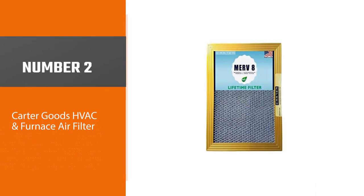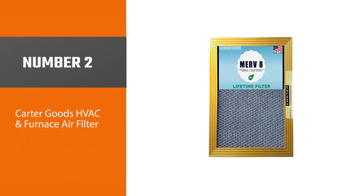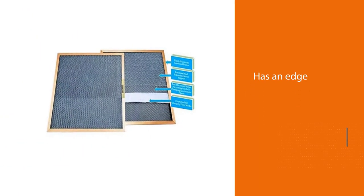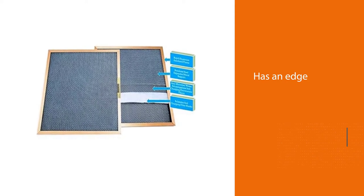Number 2: Kata Goods HVAC and Furnace Air Filter. The Kata Merv 8 filter has an edge that almost gives it the appearance of something you would put a picture in, with its golden-colored frame.